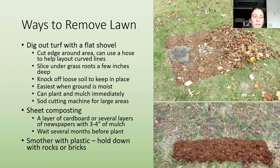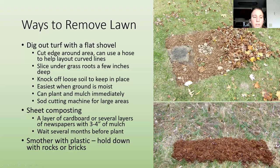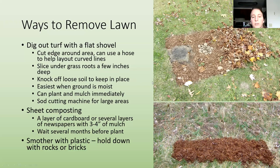For ways to remove lawn: you can dig out turf with a flat shovel, which works well for smaller areas. Cut an edge around the area first. For curved areas, use a hose to help lay out the lines. Then slice just a few inches below the bottom of the grassroots so it comes out like a mat, and knock off the soil to keep organic matter in place. After this you can plant the area immediately.